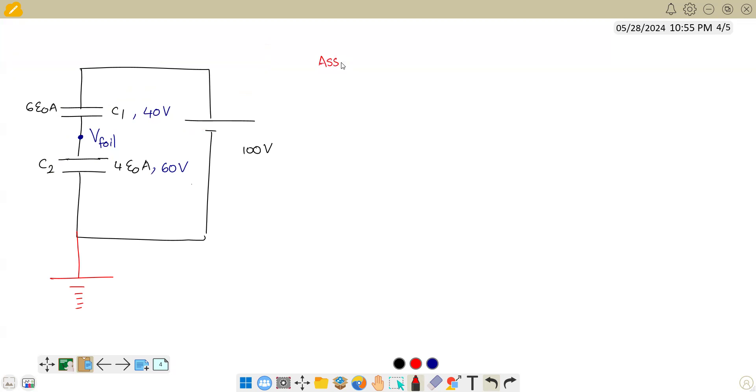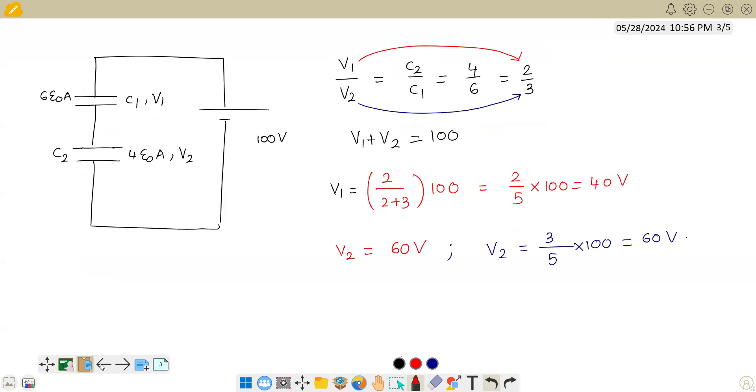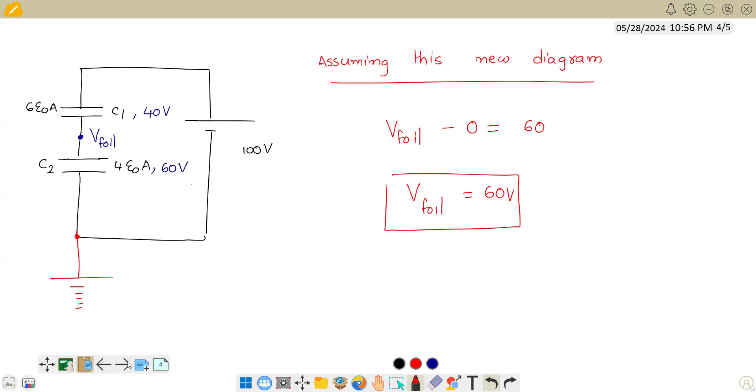So assuming this new diagram, we can say V foil minus 0 equals 60. So from this V foil would be equal to 60. That's what we can tell or else we can only tell this is 40 volts, this is 60 volts, and we cannot solve it further. But what is the most important takeaway in this problem? The most important takeaway is distribution of voltage across the capacitors. Hope you understood how to solve this problem. Thank you.